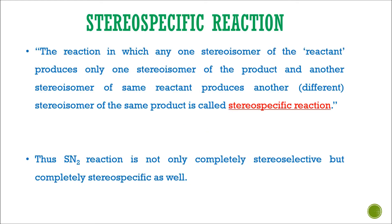That brings us to another term, which is known as stereospecific reaction. Here, the reaction in which any one stereoisomer of the reactant produces only one stereoisomer of the product, and another stereoisomer of the same reactant produces another stereoisomer of the same product, is known as a stereospecific reaction. Thus, SN2 reactions are not only stereoselective but stereospecific as well.